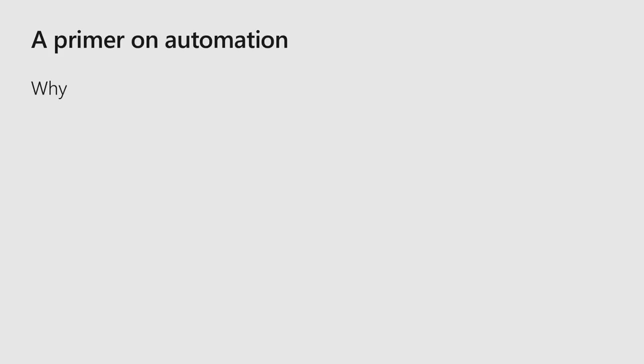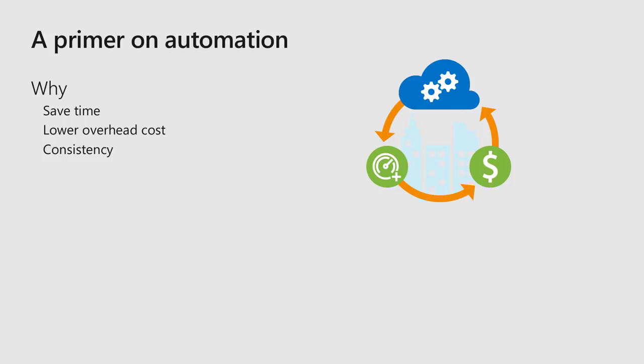Let me talk a little bit about automation and why it's important. You want to do automation to save time, to lower the costs and the time you invest, especially for the tasks you do a lot of times. And you also want to keep consistency. If I have to do something five times, you can expect I end up with four different versions, just because I forget stuff or don't do things in the same order. But if I automate it and write it down, I usually get a consistent result.